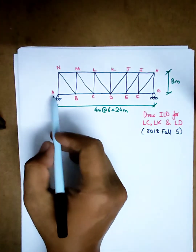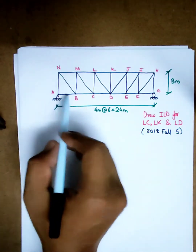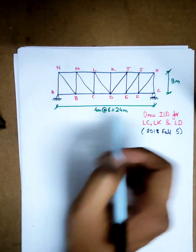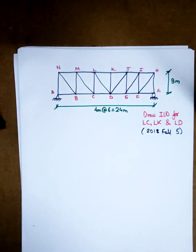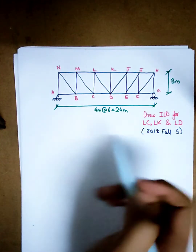The loop is the bottom chord: A, B, C, D, E, F, G, which are the move chords. If you want to use the LD, under BC: LC, LK, and LD.